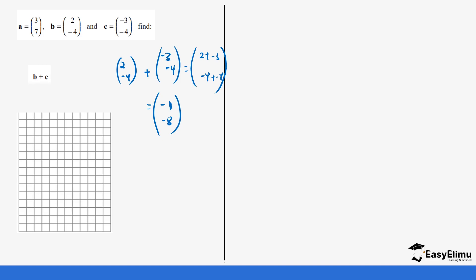So b plus c = (-1, -8). This tells us our vector is moving one step along the x-axis and eight steps along the y-axis downward. We put our starting point here, move one step on the x-axis, then eight steps downward — one, two, three, four, five, six, seven, eight — and this is our vector.